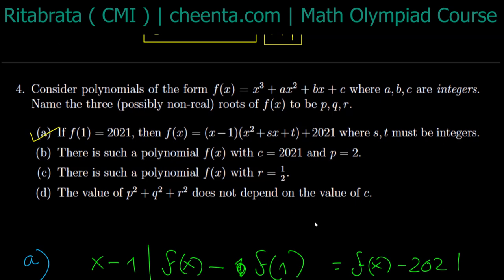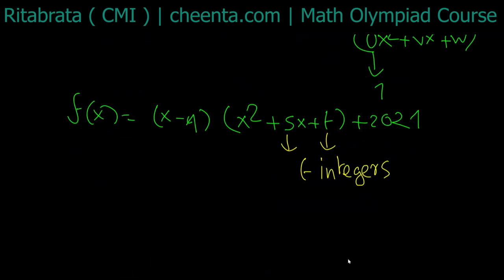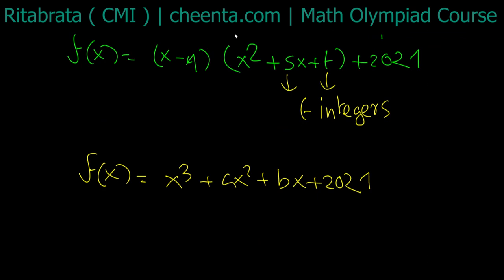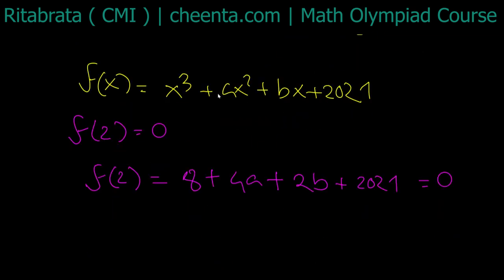We have to determine whether there is a polynomial f with c = 2021 and p = 2. So f(x) = x³ + ax² + bx + 2021, and we have f(2) = 0. Now what is f(2)?